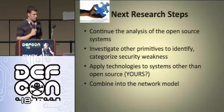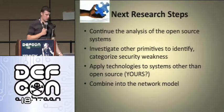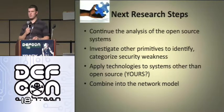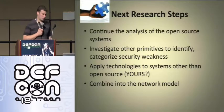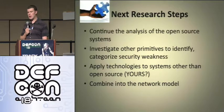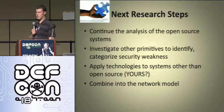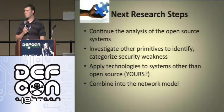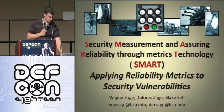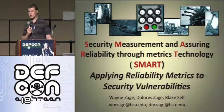Our next research steps are to continue analysis of open source systems and find other primitives to identify additional security weaknesses, since we didn't identify 100%. We also think there should be metrics out there to better find all vulnerabilities. If anybody has systems they want analyzed, you can contact them — they've worked with all different agencies and companies, and NDAs and clearances are no problem. That's it — on to questions.